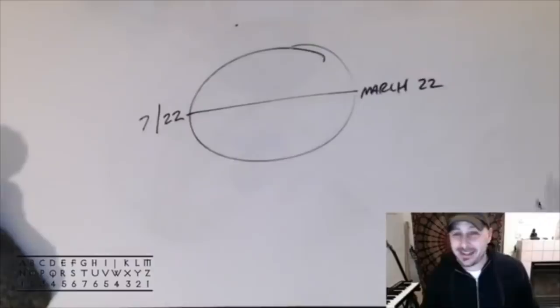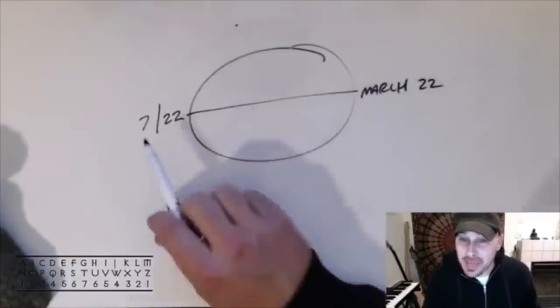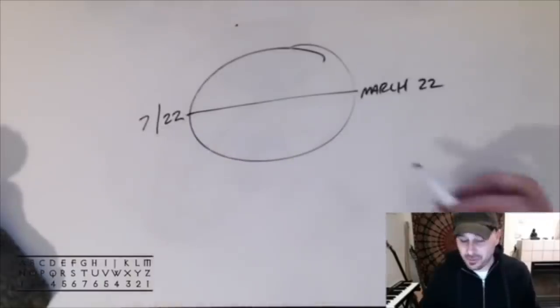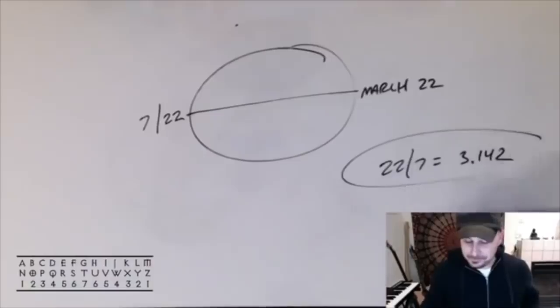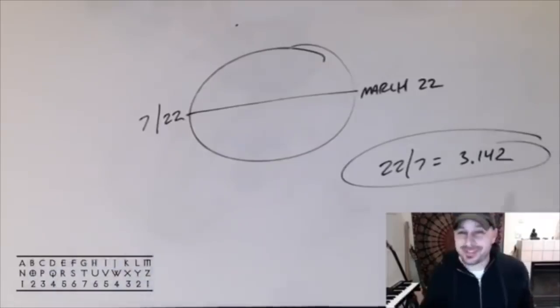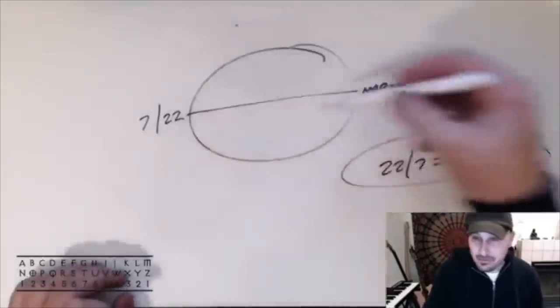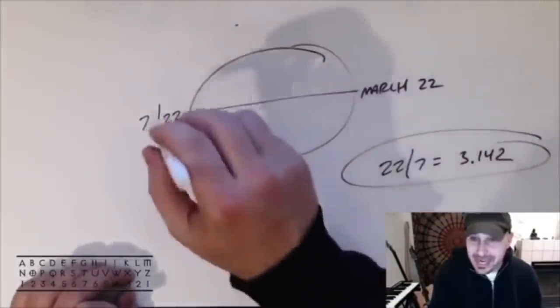Okay, hey genius, the autumnal equinox this year is the 23rd. The autumnal equinox happens on September, or 7/22. Well 22 divided by 7 is 3.142.